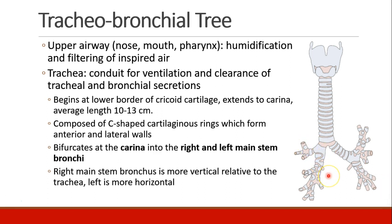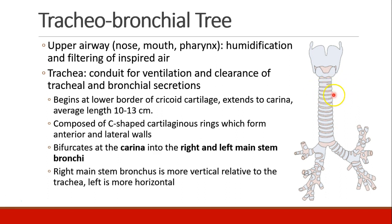The trachea begins at the lower border of the cricoid cartilage and extends all the way down to the carina, an average length of 10 to 13 centimeters. The trachea is composed of C-shaped cartilaginous rings, which form the anterior and lateral walls, and you can see these cartilaginous rings when you do bronchoscopy.